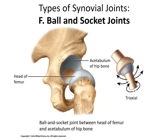Finally we have ball and socket joints, which allow for a great deal of movement — rotation plus movement in all three planes. We have two examples: the joint between the head of the femur and the acetabulum of the coxal bone, and the shoulder joint consisting of the head of the humerus articulating with the glenoid fossa of the scapula. The shoulder joint is by far the most mobile, but it comes at a price — it is more likely to be dislocated than other joints. In contrast, a stable joint like the elbow has no rotation and movement in only one plane.